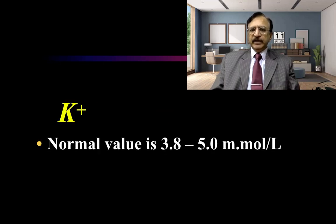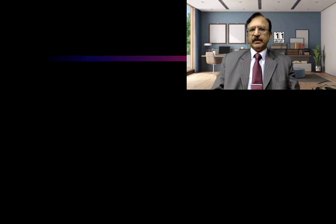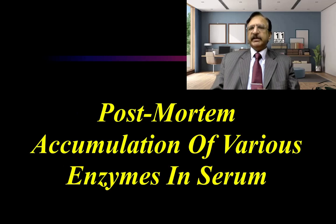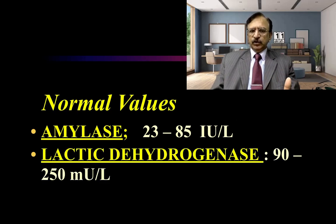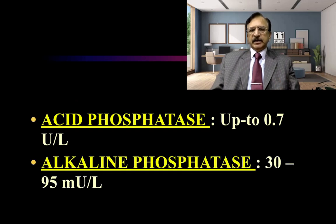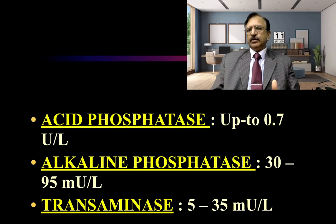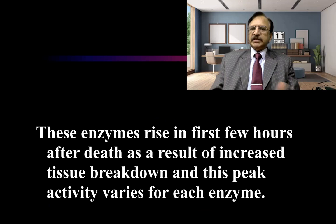Regarding potassium, the normal value is 3.8 to 5 millimole per liter and it starts rising after death due to diffusion from the vascular endothelium. Post-mortem accumulation of various enzymes in the serum also occurs: normal values are amylase 23 to 85 international units per liter, lactic dehydrogenase 90 to 250 millimole per liter, acid phosphatase up to 0.7 units per liter, alkaline phosphatase 30 to 95 microunits per liter, and transaminase 5 to 35 microunits per liter. In the first few hours after death, as a result of increased tissue breakdown, these enzymes rise, and peak activity varies for each enzyme.